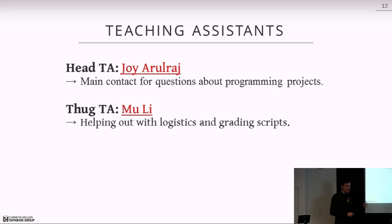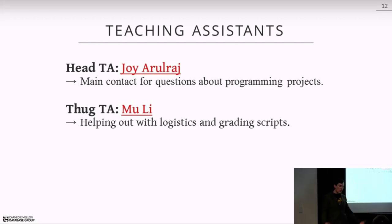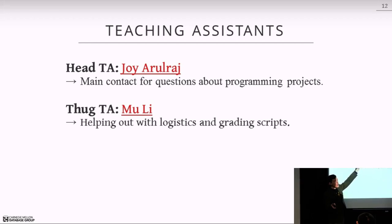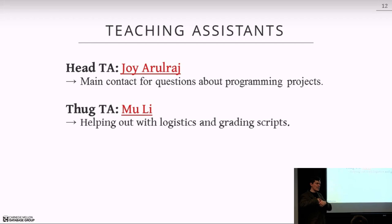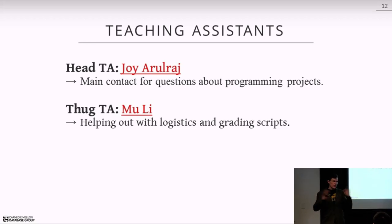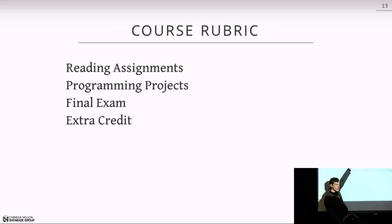We have two TAs in the class. The head TA is Joy Arouraj — he's helping us build the database system and run all the projects, and he'll be your main contact for code questions. Right now he's back in India for personal reasons and will be back in about a month. Mu Li is handling background stuff like testing scripts and utilities, but he's currently in San Francisco and unlikely to return to Pittsburgh. For questions about specific parts of the code on your projects, Joy is your main contact.